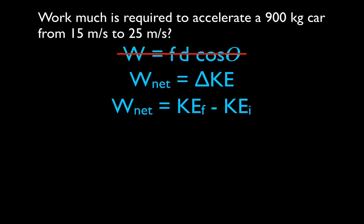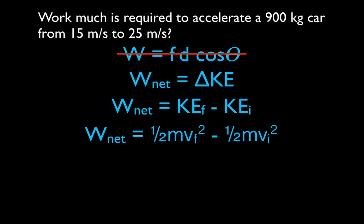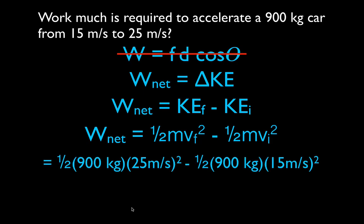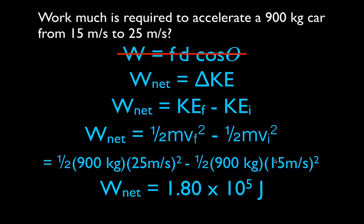The net work equals final kinetic energy minus initial kinetic energy — always final minus initial. Expanding: one-half mv final squared minus one-half mv initial squared. That's one-half times 900 times 25 squared, minus one-half times 900 times 15 squared. The net work done on the 900 kg car as it goes from 15 to 25 meters per second is 1.80 times 10 to the 5 joules.